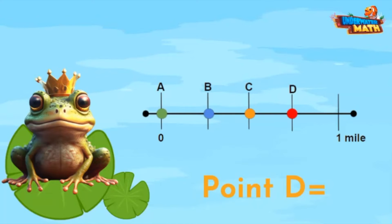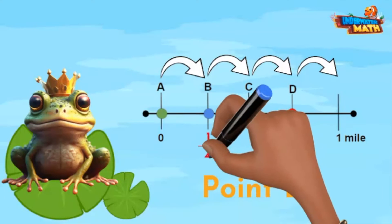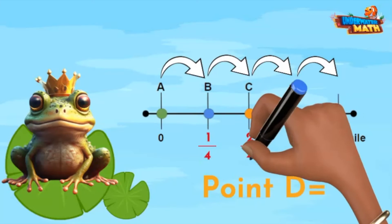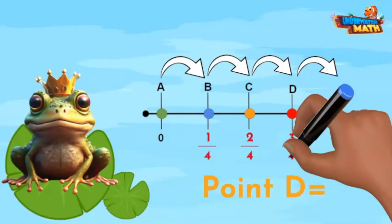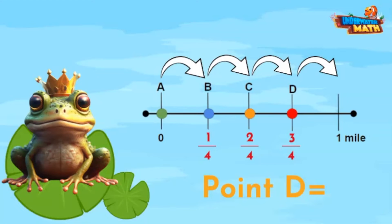This number line is divided into one, two, three, four equal parts. Let's label the blank hash marks. One fourth, two fourths, and three fourths. It looks like point D represents the fraction three fourths.